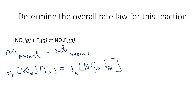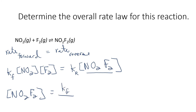We're isolating NO2F2 so that we can find the correct rate law, since you cannot have an intermediate concentration in the overall rate law. So: concentration of NO2F2 equals (kf / kr) times the concentrations of the reactants NO2 and F2.